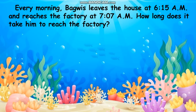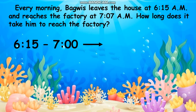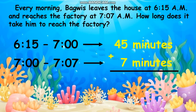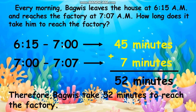Another example: every morning, Baguiz leaves the house at 6:15 AM and reaches the factory at 7:07 AM. How long does it take him to reach the factory? By adding, find first the elapsed time in each hour. From 6:15 to 7 o'clock has an elapsed time of 45 minutes, and from 7 to 7:07 has an elapsed time of 7 minutes. Adding 45 minutes plus 7 minutes equals 52 minutes. Therefore, Baguiz takes 52 minutes to reach the factory.